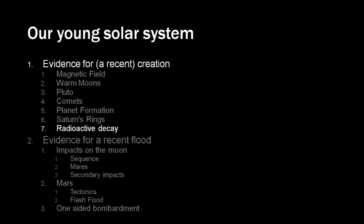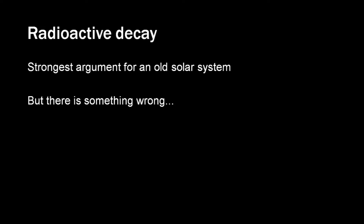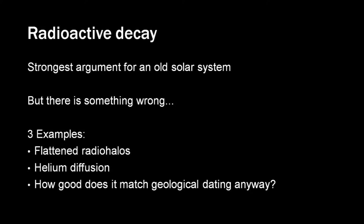Radioactive decay. Let me admit that radioactive dating methods form the strongest evidence for an old solar system. However, there is something wrong. Let's take a look at three examples. Flattened radio halos, helium diffusion, and how good does it match geological dating anyway?